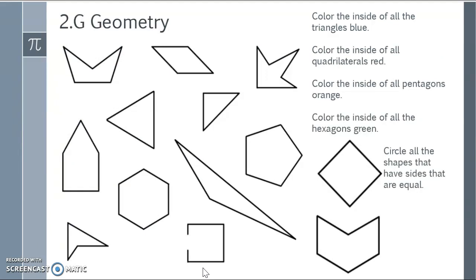I assume that you print out the lesson PowerPoints. So take a moment, pause the video, and complete what I have listed here. Color the insides of all the triangles blue. Color the inside of all quadrilaterals red. Color the inside of all pentagons orange. And color the inside of all the hexagons green. Circle all the shapes that have sides that are equal. Take a moment, pause the video, and then we'll reveal the answer.